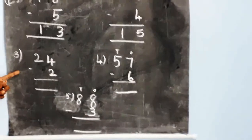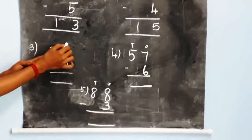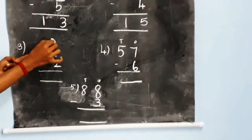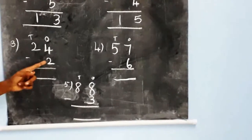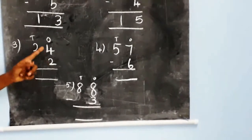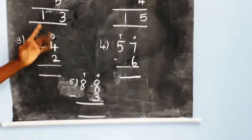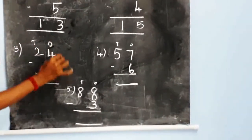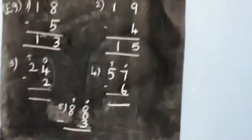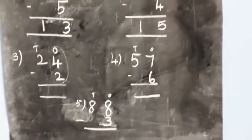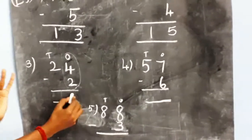Now look at the third sum. This is the ones place and this is the tens place. Twenty-four minus two. First, subtract the ones place. Here four minus two: one, two. The answer is two.